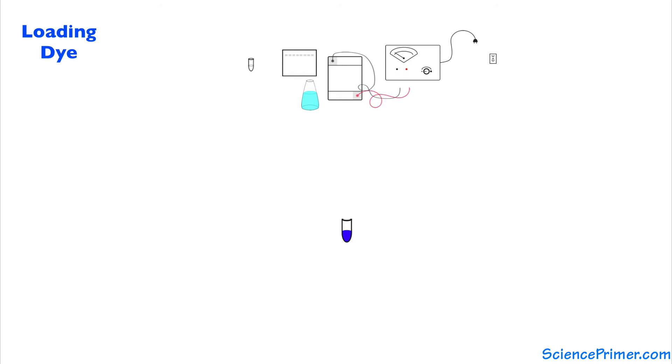Loading dye is a colored buffer mixed with the DNA prior to loading it onto the gel. The loading dye contains a relatively high concentration of either glycerol or sucrose. This makes the solution more dense than the surrounding running buffer so that when a sample is pipetted over top of the well, it sinks down into the well.